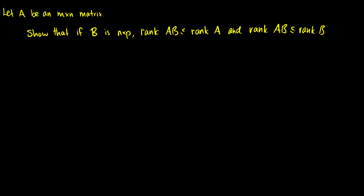In this video we're going to do a proof with ranks. Let A be an M by N matrix and let B be an N by P matrix. We want to show two things: the rank of AB is less than or equal to the rank of A, and the rank of AB is also less than or equal to the rank of B.